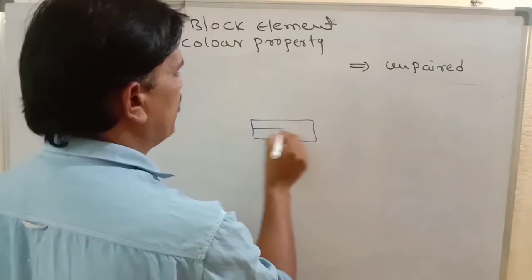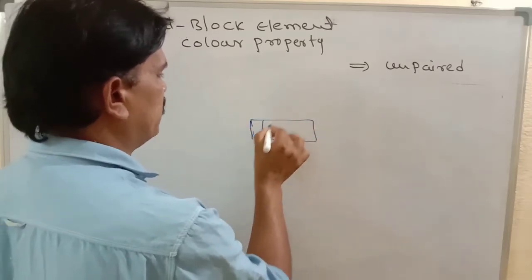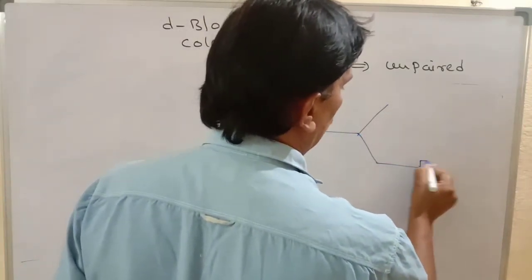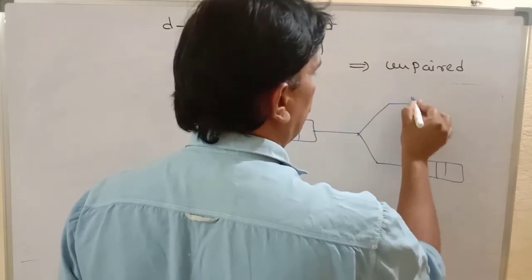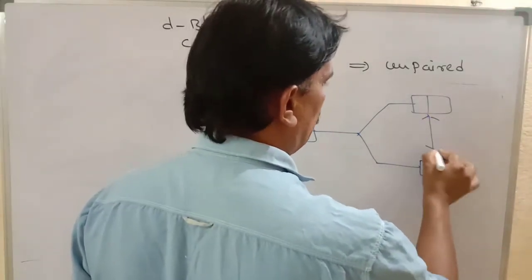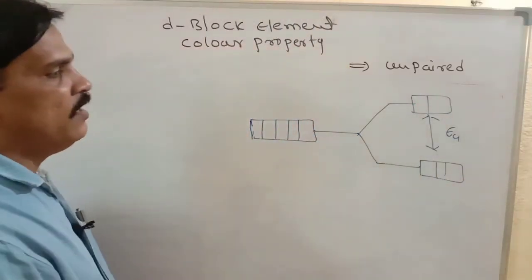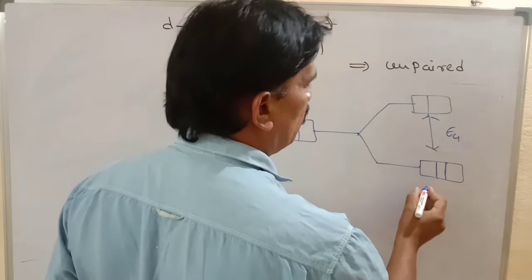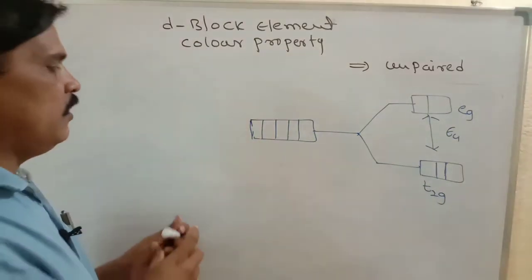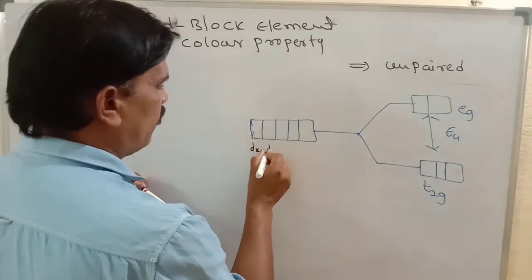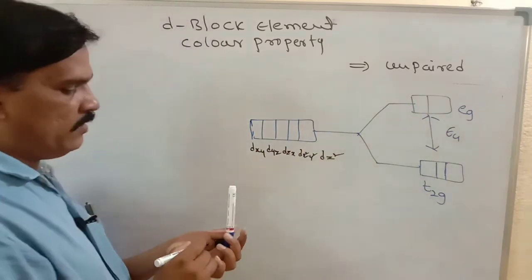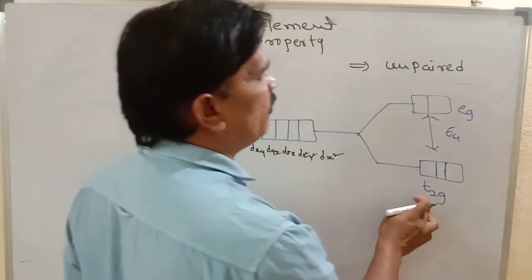The D orbital has 5 subcells: Dxy, Dyz, Dzx, Dx²−y², and Dz². These 5 D orbitals split into two energy levels — a lower energy level and a higher energy level — with a very small energy gap between them. The lower set is known as T2G orbitals and the higher set as EG orbitals.